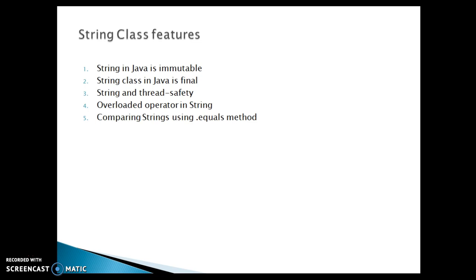Looking at the slide, the first feature we will explore is that a string in Java is immutable. Once you create a string object, the content of that string cannot be modified. As we have already seen, Java maintains a string pool where references are shared. Thus, changing the content of any string will also affect the other strings sharing the same reference. That's the reason why a string is immutable in Java.